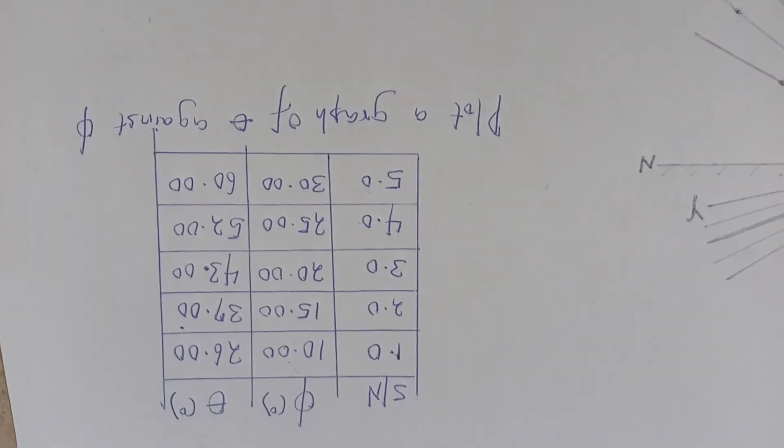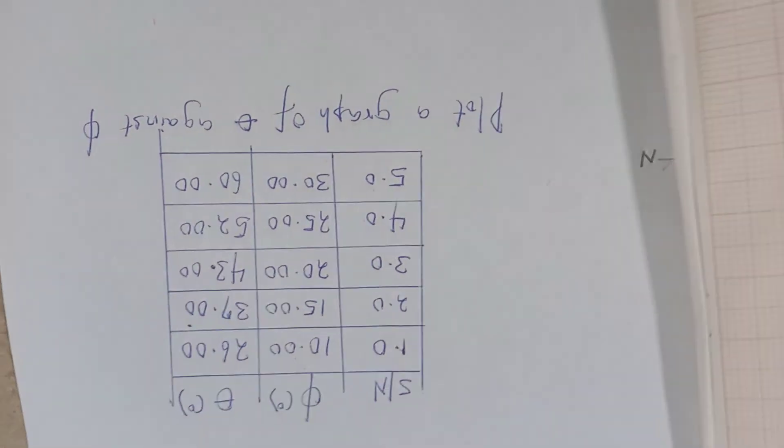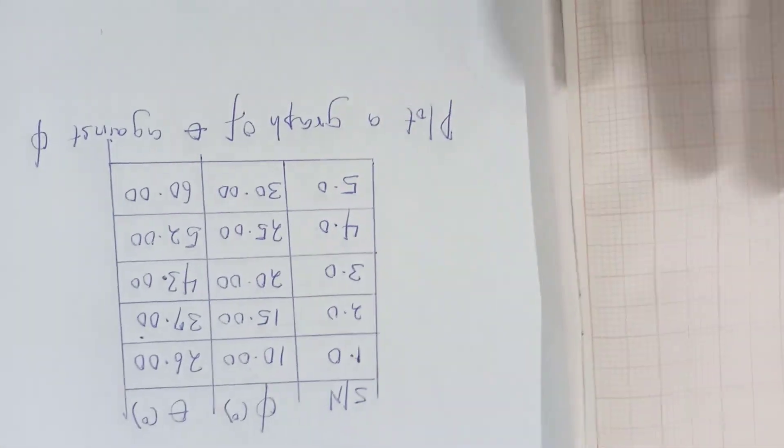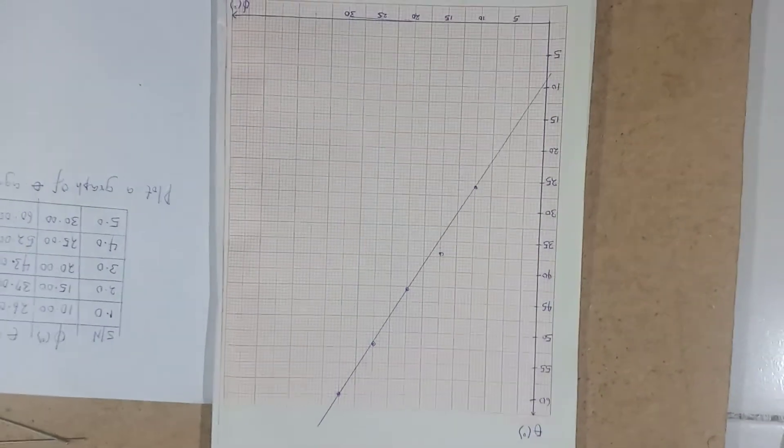For every given value of theta, the corresponding value of phi. And then you'll be expected to plot a graph of theta against phi, or as the case may be, anything that the examiner sees fit to test you on. If I plot the graph, this is what the graph gave me.